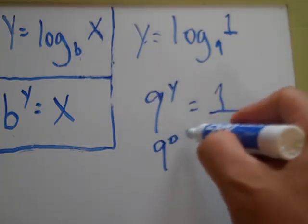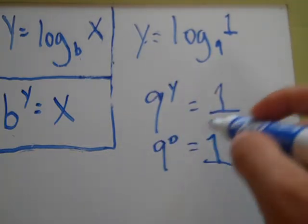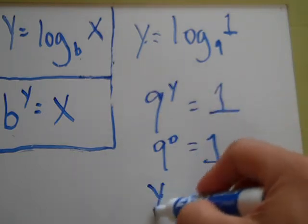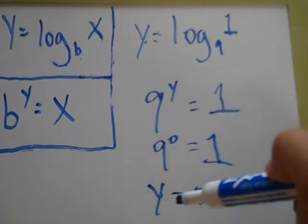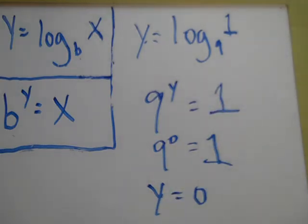So 9 to the 0 power equals 1. Therefore, y equals 0. That's how you evaluate a logarithmic expression without a calculator. We'll see you next time. Thank you.